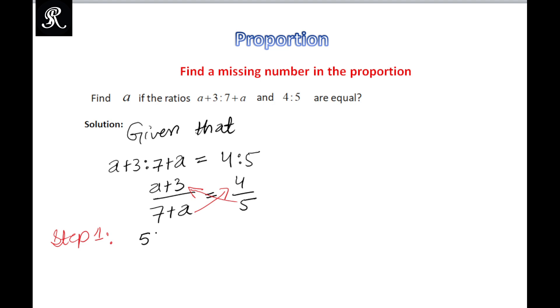So that would be 5 times (a+3) is equal to 4 times (7+a). Now we will simplify and multiply this 5 and 4 inside the brackets, and we will get 5a+15 is equal to 28+4a.